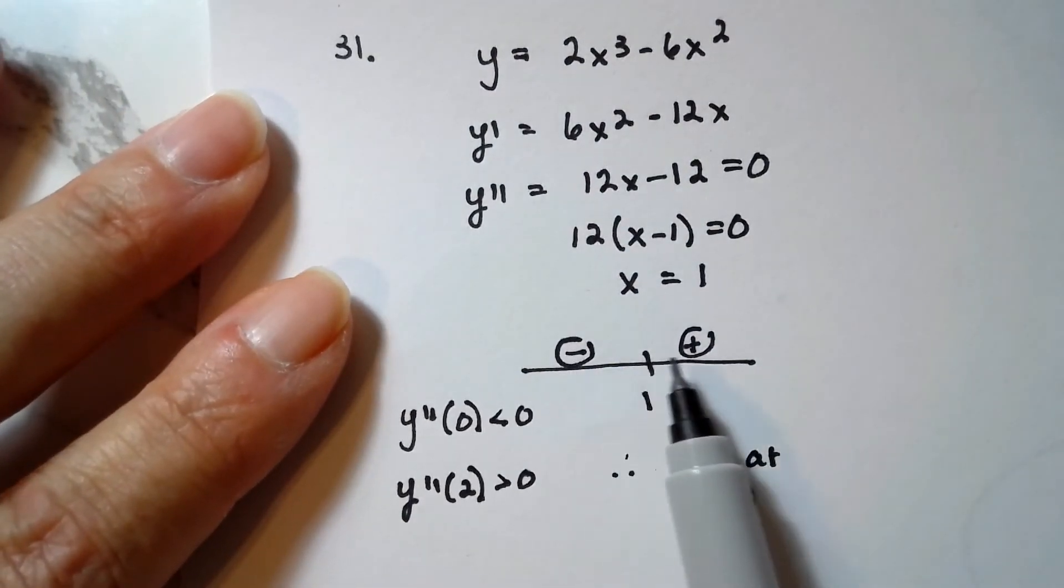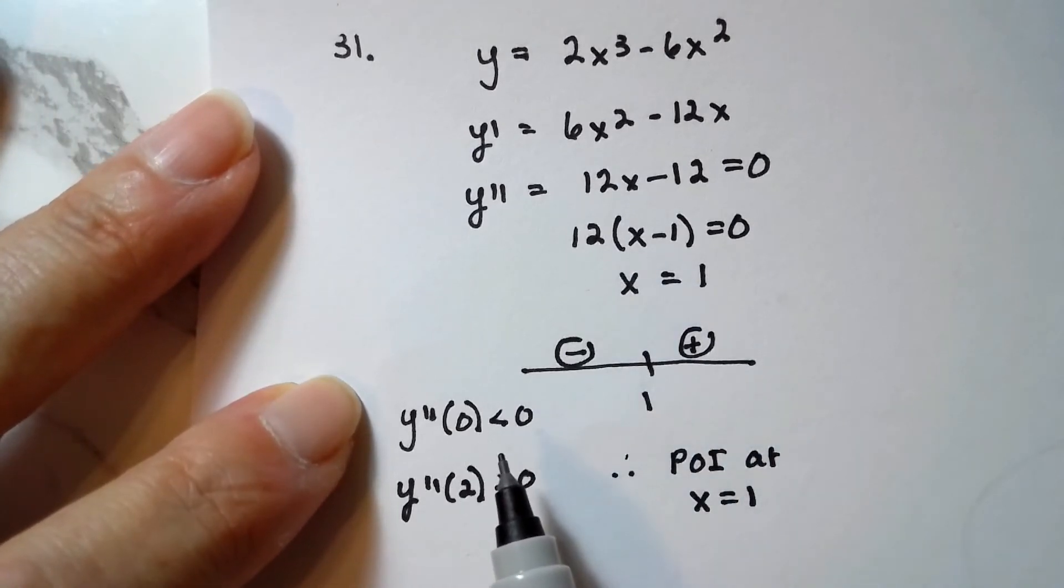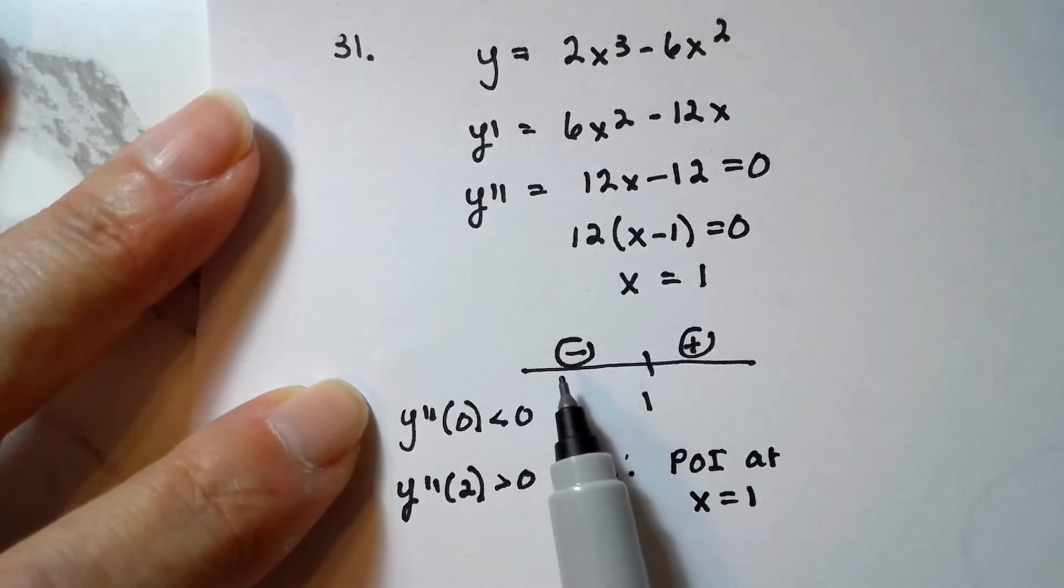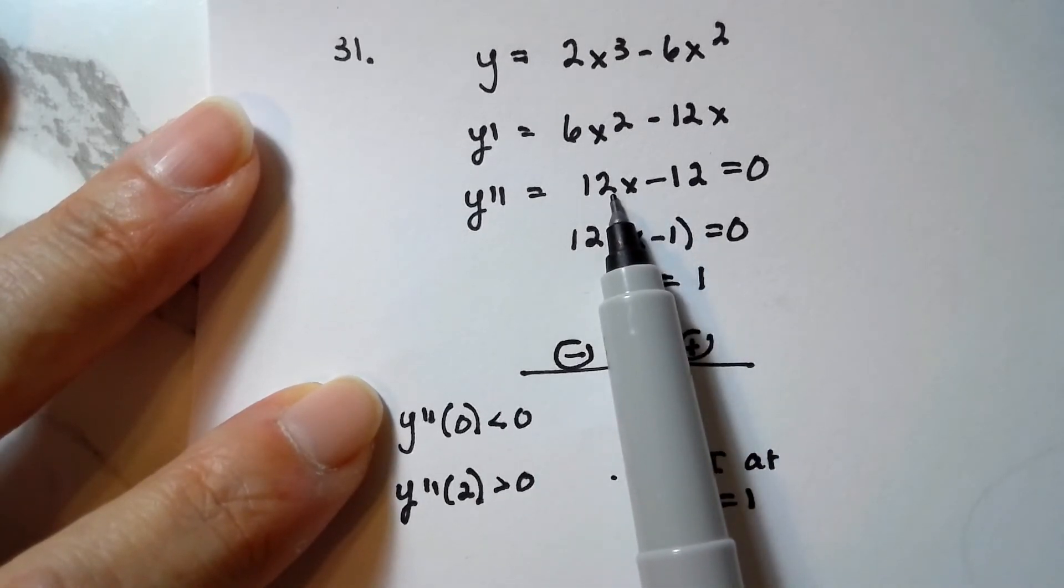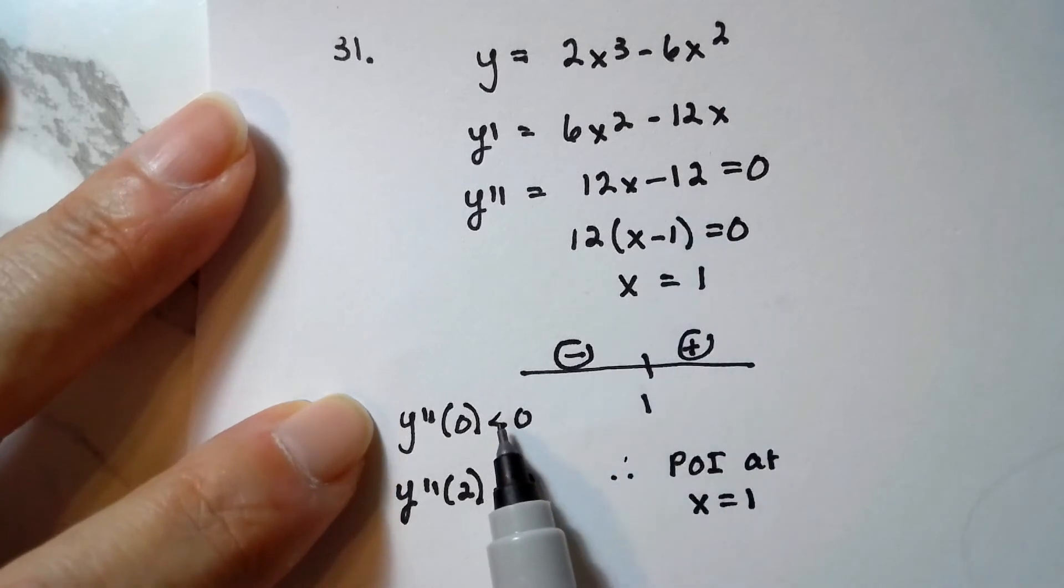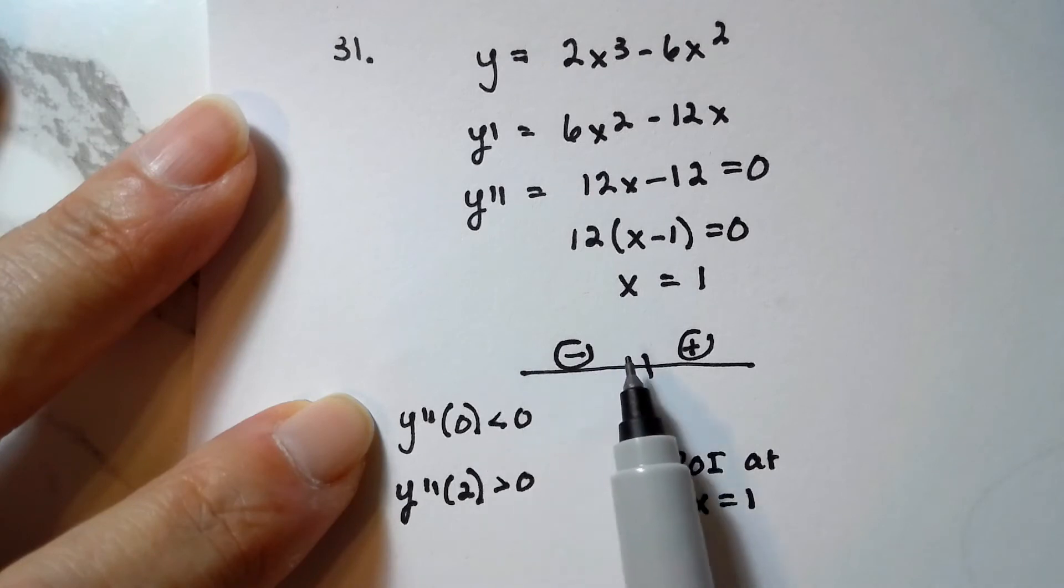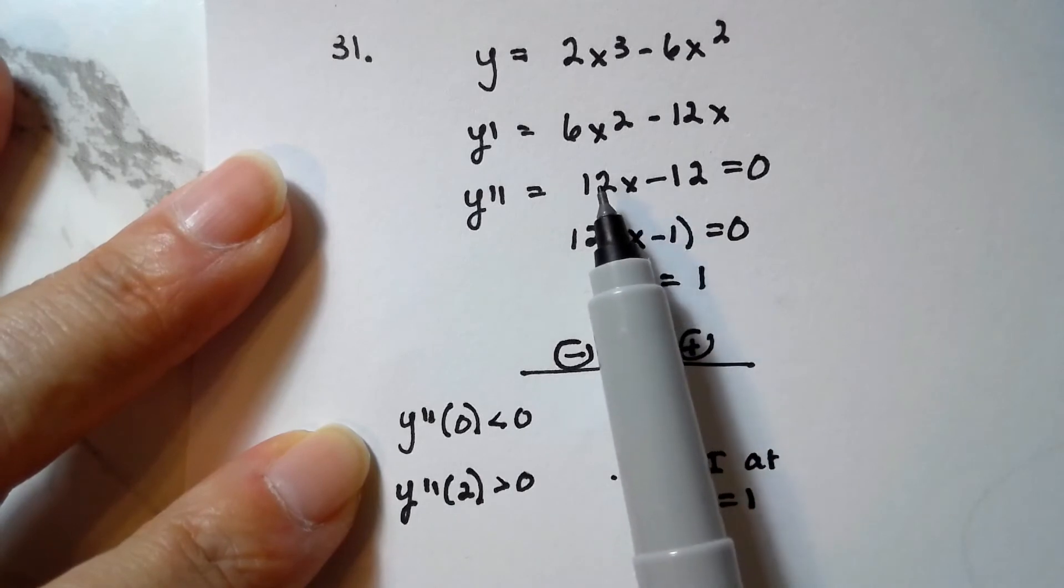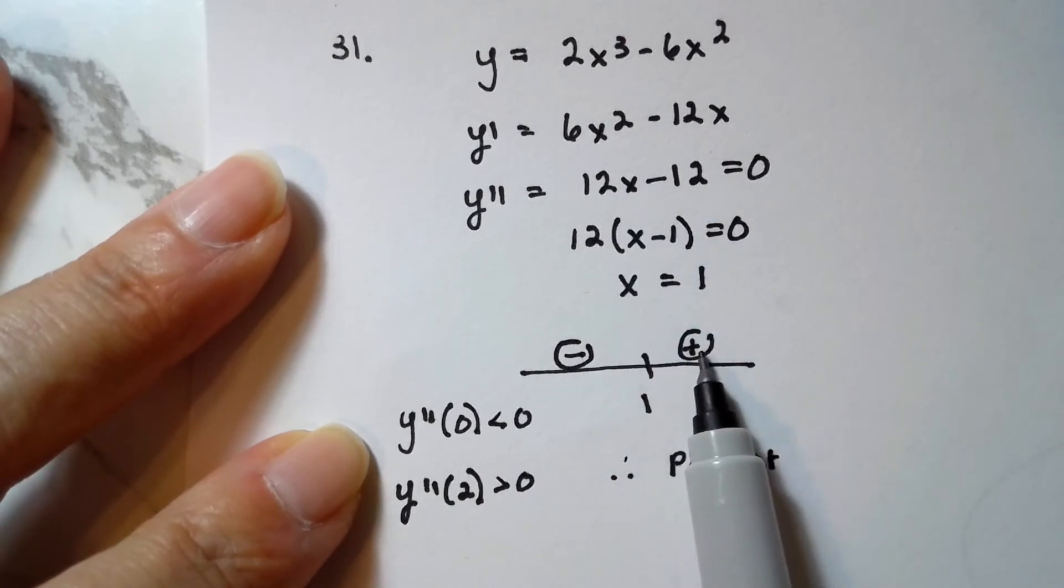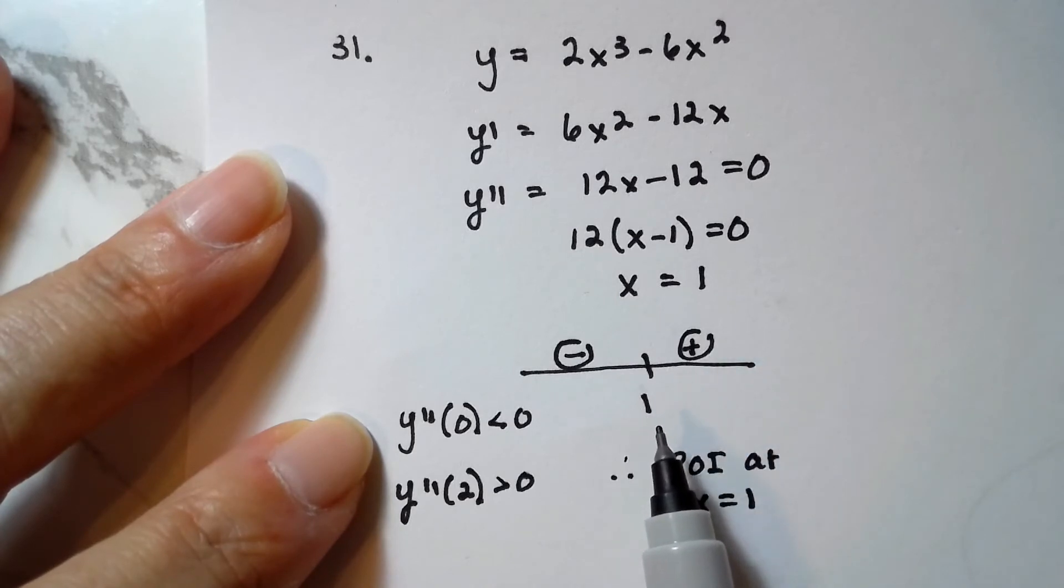And then I want to test to the left and the right in the second derivative to see what the second derivative is doing. Well, if I plug in a zero, I get zero times 12 is zero minus 12 is a negative 12. So this value is negatively valued. And so I know the second derivative is negative from negative infinity to one. And if I choose a two to the right of one, and I plug that in, I'm gonna have 24 minus 12, which is a positive number. So the second derivative is positive to the right of one. So since the second derivative equals zero at x equals one and changes sign, then there's going to be a point of inflection at x equals one.